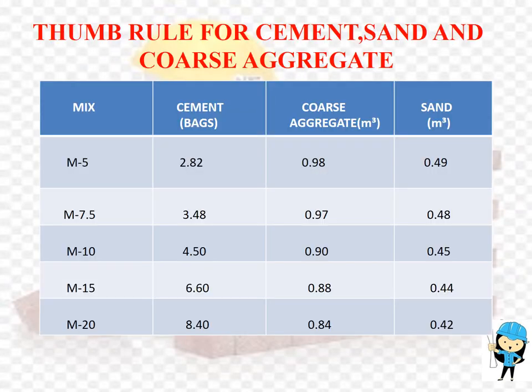Now we are going to see the thumb rule for calculating the amount of cement, sand, and coarse aggregate required. For mix design M5: 2.82 bags of cement, 0.98 m³ coarse aggregate, and 0.49 m³ sand are required. For mix design M7.5: 3.48 bags of cement, 0.97 m³ coarse aggregate, and 0.48 m³ sand are required.